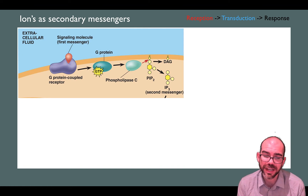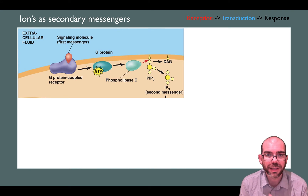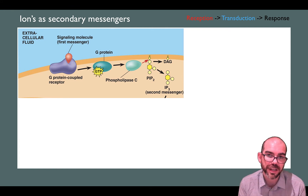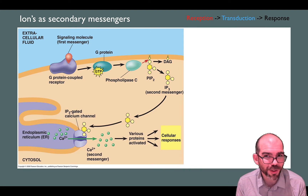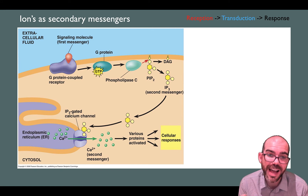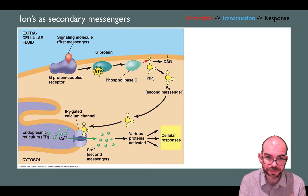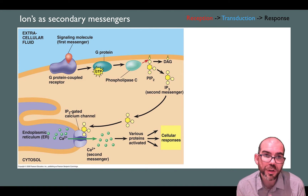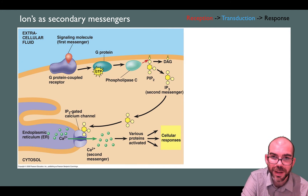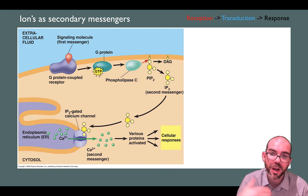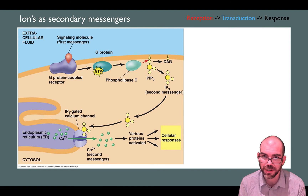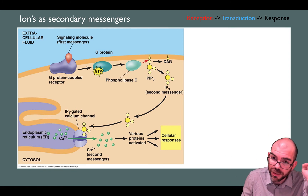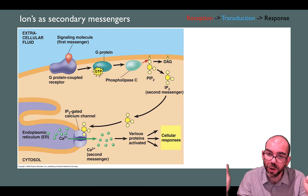Another example is using ions as a secondary messenger. Here the G protein receptor activates an enzyme called phospholipase C, which triggers IP3 as a secondary messenger. The IP3 secondary messenger works as a ligand to open an ion channel. Once that ion channel is opened — here from the endoplasmic reticulum — it sends out calcium ions, which act as a secondary messenger to transduce to a cellular response. Notice this pathway combines a G protein receptor with an IP3 secondary messenger and an ion channel. Receptors can combine in unique ways and transduction pathways can respond in unique ways — we have our ligand stimulus and our response, but how we get from one to another varies dramatically.